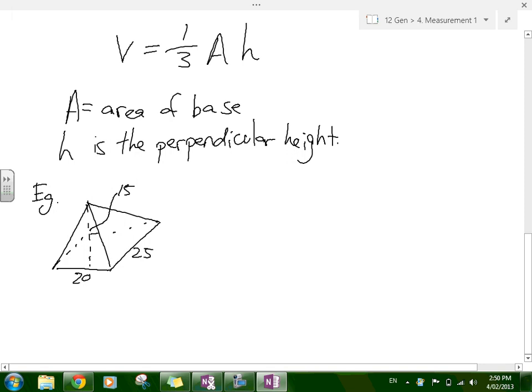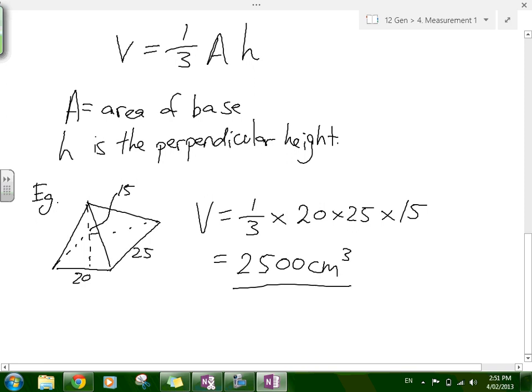So this pyramid has a rectangle on the bottom, 20 by 25, with perpendicular height of 15. The volume is V equals one-third times the area of the bottom, which is 20 times 25, times the height, which is 15. That equals 2,500 cubic centimeters.